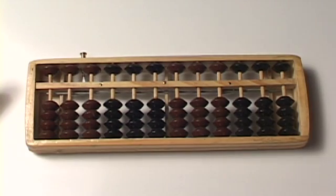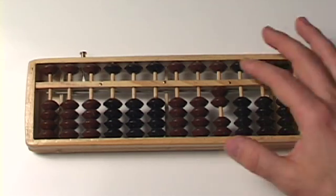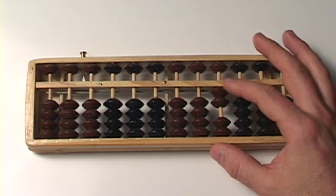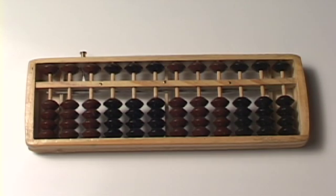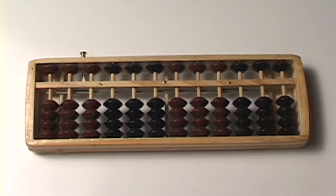Clear the abacus. Put two on there. Let's do two, take away two. Or two, minus two. That means I move two beads away from the center beam. And what am I left with? Zero. An abacus where none of the beads are touching the center bar reads zero. But, of course, you know that.